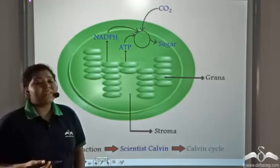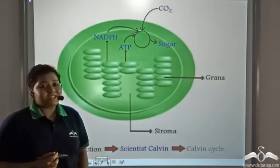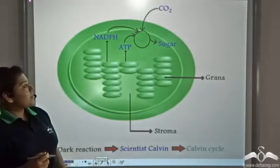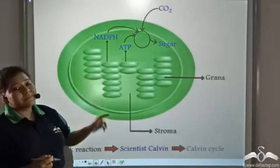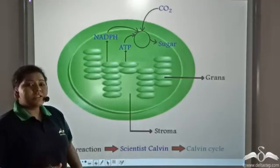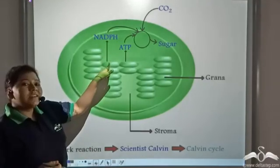Now how does food get prepared in the dark reaction? At the end of the light reaction, NADPH and ATP are formed which come out of the grana to the stroma.